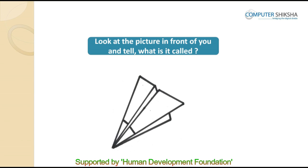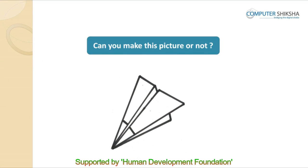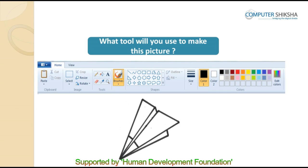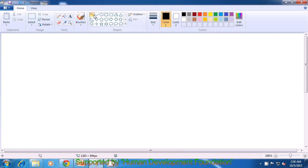Look at this picture — this is a picture of a paper plane. Can you all make this picture? Using which tool will you make this picture? You will all make this picture using the line tool. Let us watch this video carefully and learn how to make this type of picture. To make this drawing, firstly select the line tool, and in the drawing sheet make a line by dragging. Similarly, you can use this dragging technique to draw a second line, as is being shown in the video.